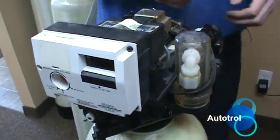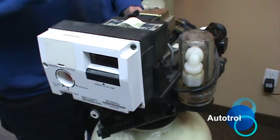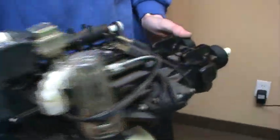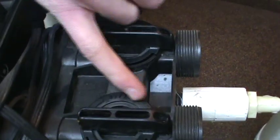And next here we've got an Auditrol softener here. This one's got a newer bypass on it. This is a newer style. It's going to be kind of the same as this Clack. It's going to have the two knobs on the top there. And instead of saying off they're going to say bypass.